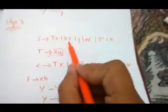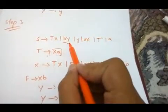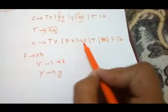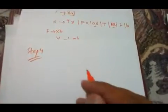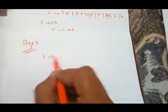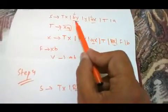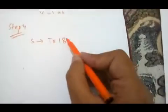Now we are left with the last step: if we have a terminal with a variable then make that terminal capital. Step 4: capitalize all the small terminals. So I'm going to capitalize — T goes to XA, where B is now capitalized — here it was small b, now I've made it capital B. Y is already capital.